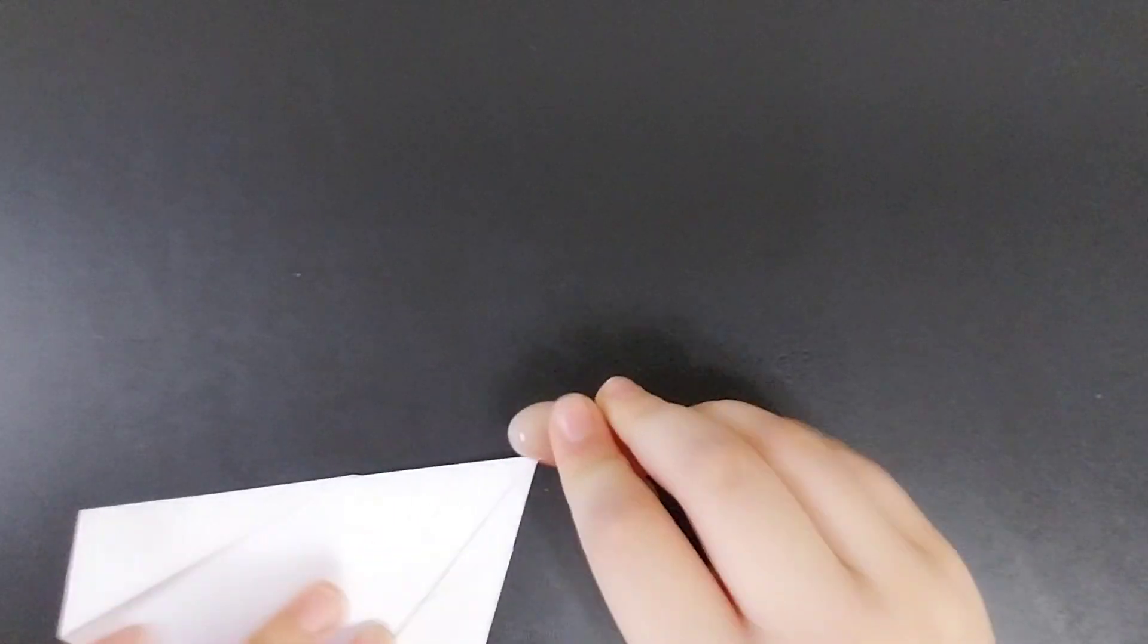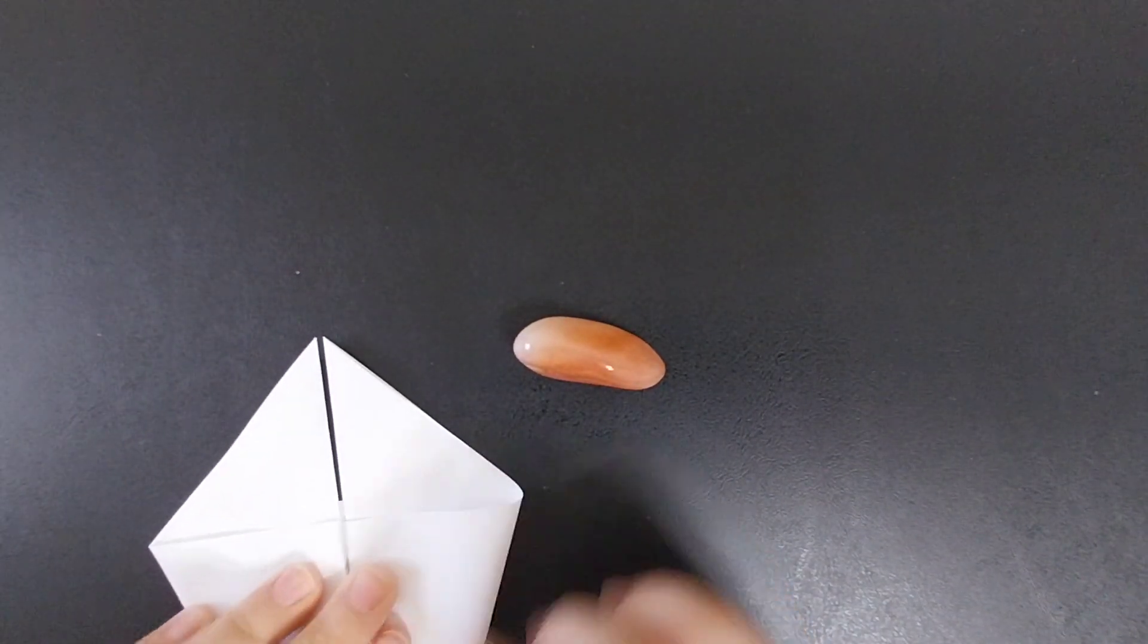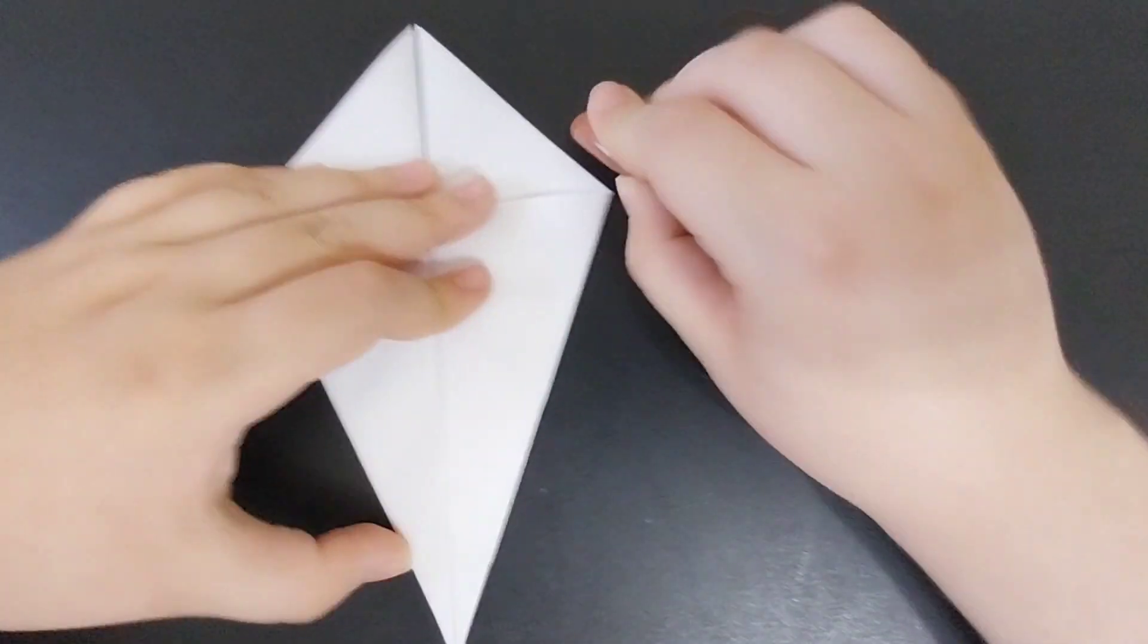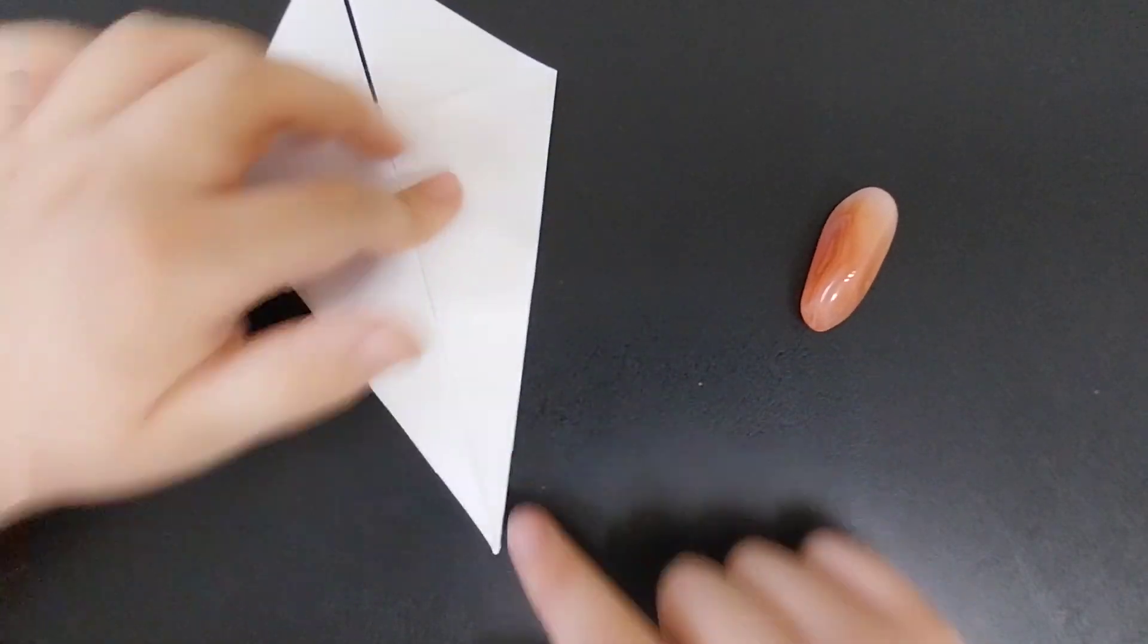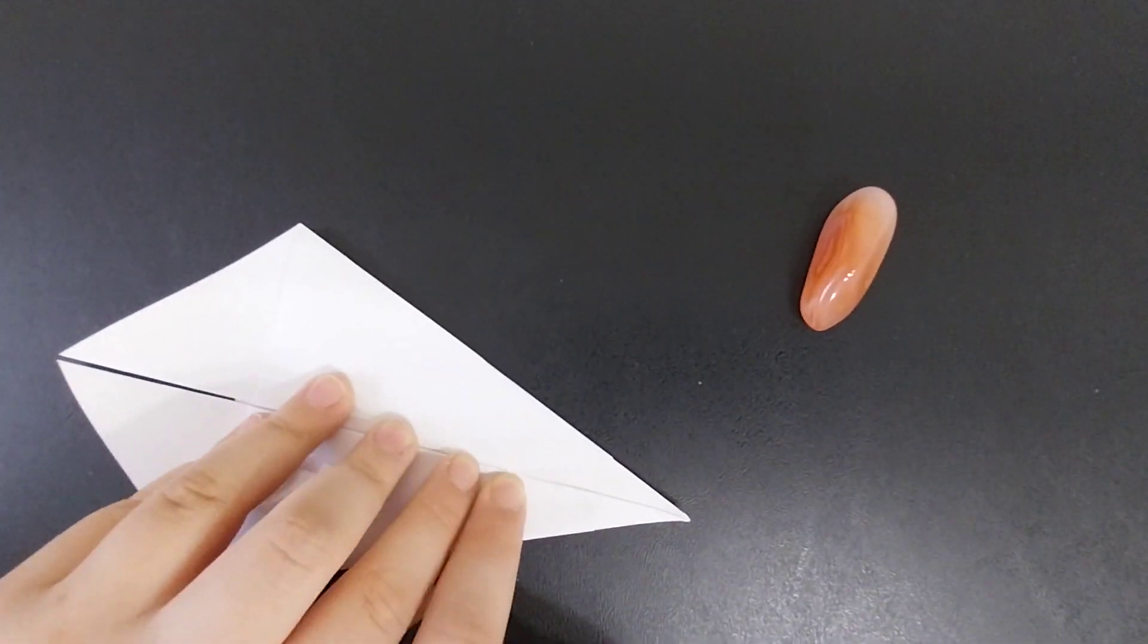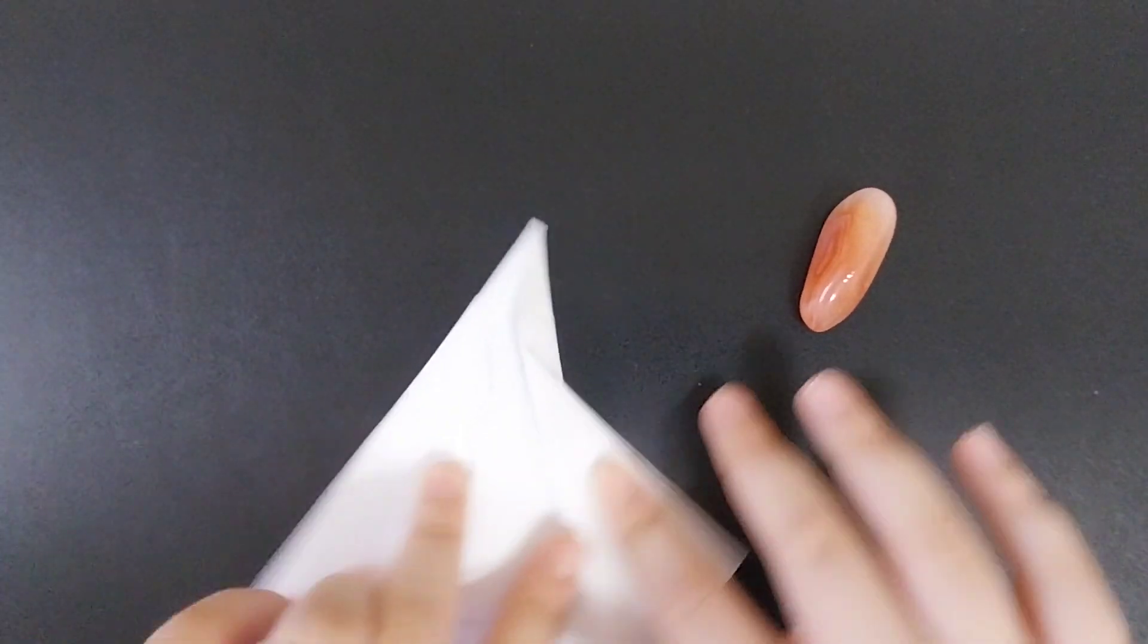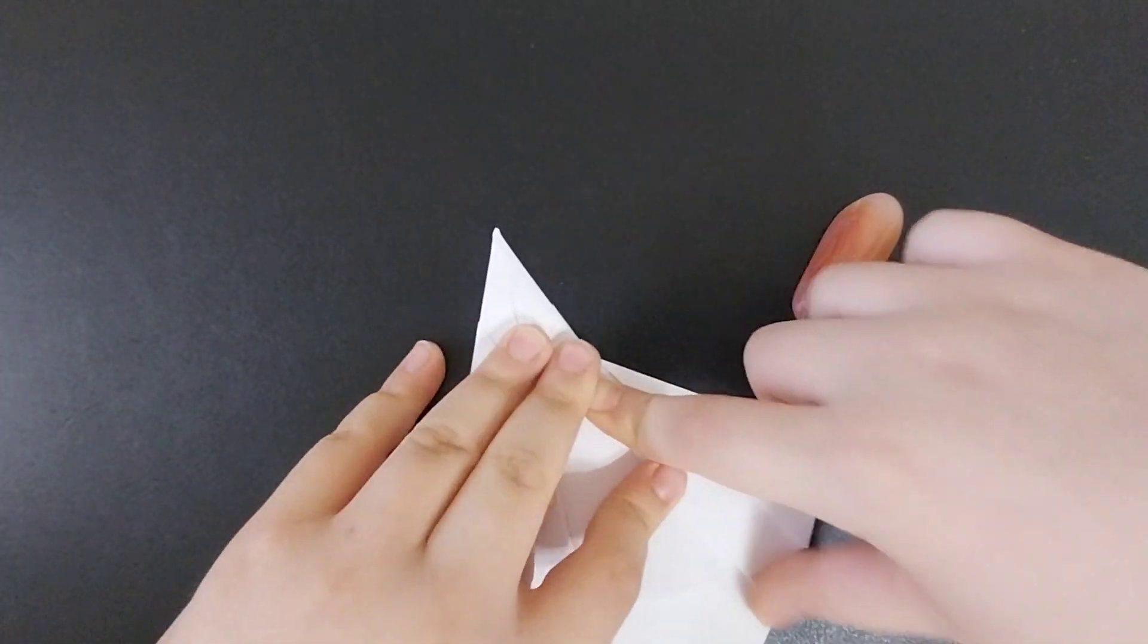Next, you're going to want to fold the edge you just made into the center. Then you're going to want to fold this layer out from a little less than a third between the distance of this and this, so make this edge or this intersection intersect with the edge you made earlier.